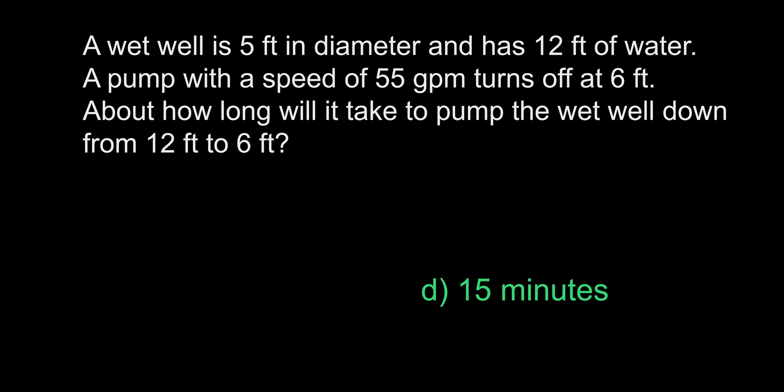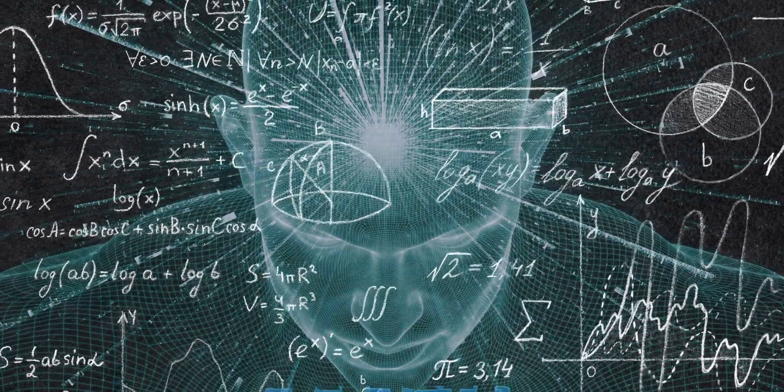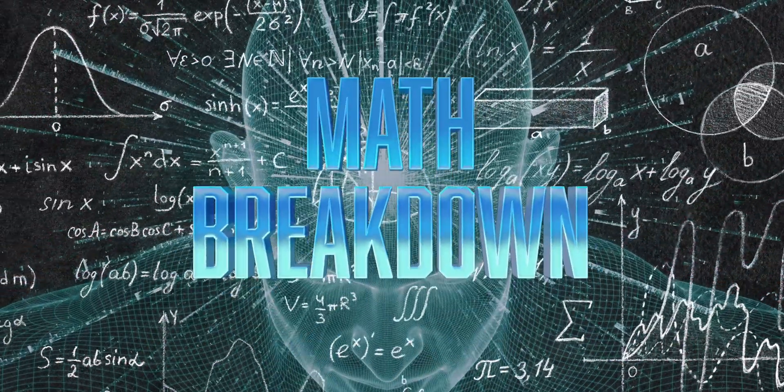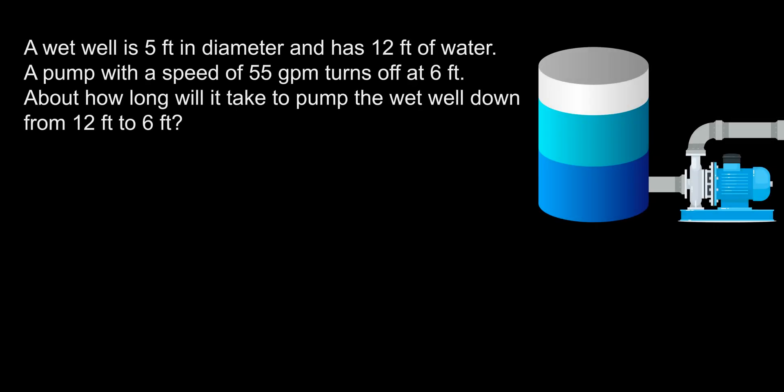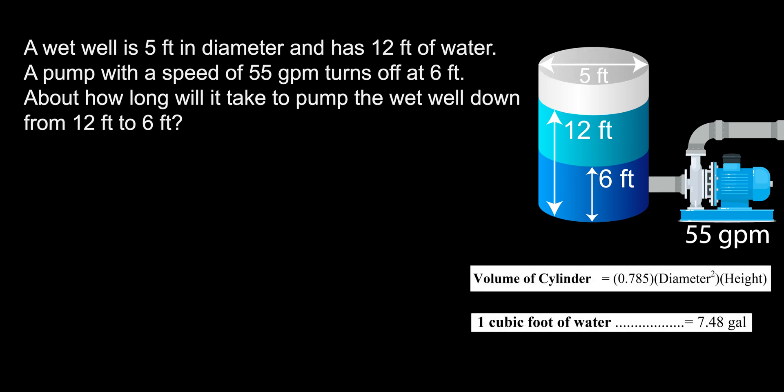Okay, get hydrated and check your posture because you know what time it is. Math breakdown. In this question, we are dealing with a cylindrical wet well, as pictured on the right. We know the pump turns on at 12 feet and off at 6 feet and pumps at a rate of 55 gallons per minute. So 12 feet minus 6 feet equals 6 feet, the height of our cylinder. We are also given the diameter, which is 5 feet. With this information, we can figure out the volume of a cylinder. We will also need to convert cubic feet to gallons. This information is given to us during the exam, which I have placed on the right. I recommend memorizing them as they are very simple and useful to know offhand.